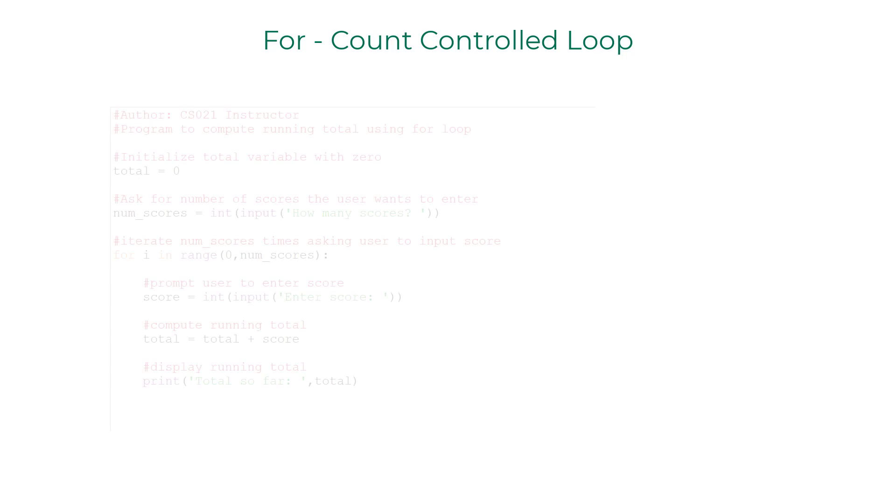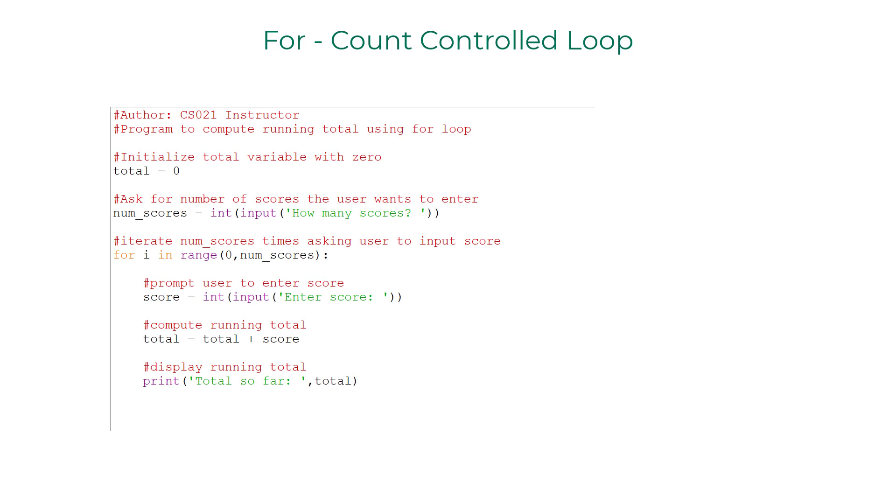I will wrap up this lecture by showing you how to compute running total using for loop. First we ask the user how many scores the user would like to enter. Once we get that number we write for i in range 0 to num_scores.